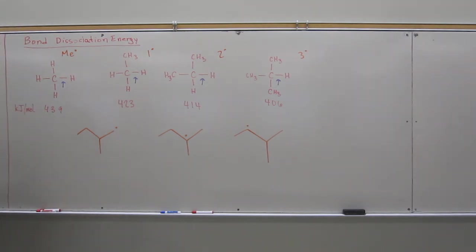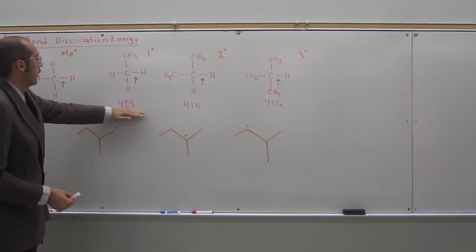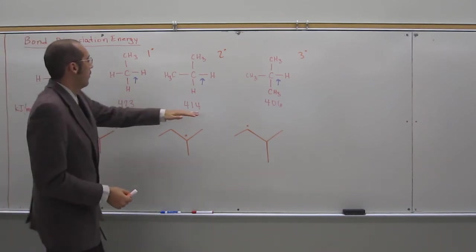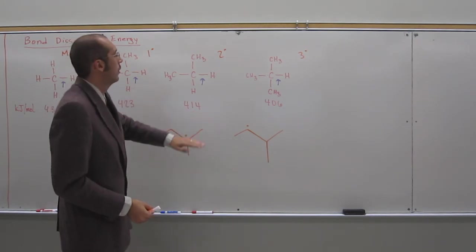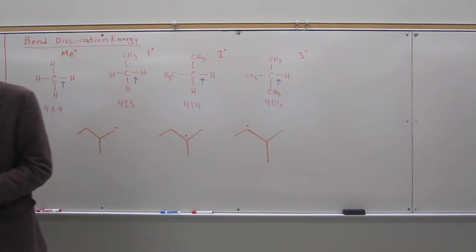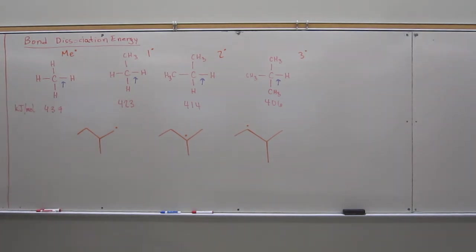And you can see 439 kilojoules per mole, 423 kilojoules per mole, which is less, 414 kilojoules per mole, and 406 kilojoules per mole. And remember, when we're talking about radical reaction, the radical will abstract the hydrogen from the bond that has the weakest amount of energy.